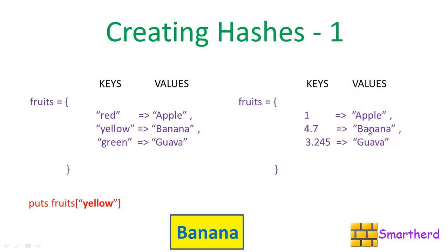This column represents the keys and this column represents the values. In order to access this banana, we have to write puts fruits subscript 4.7. Instead of yellow, I have written 4.7. Both fruits 4.7 and fruits yellow will target this banana. The output will be the same.